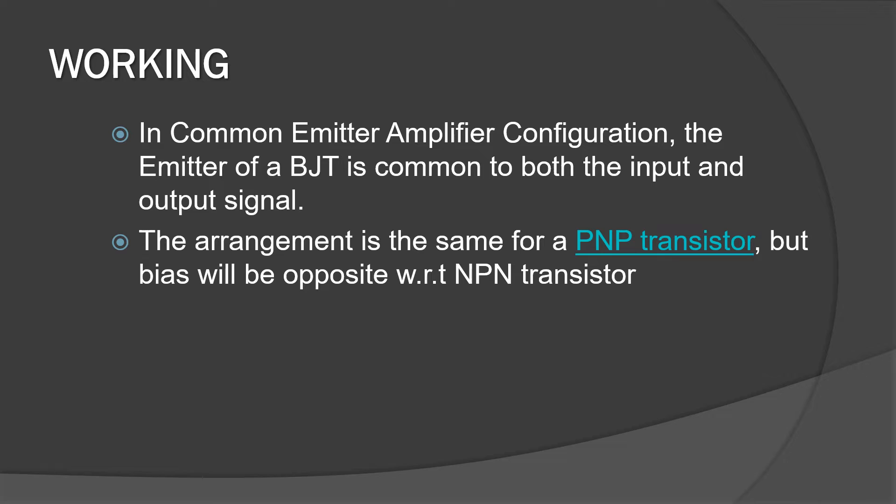Let's see the working of Common Emitter Amplifier. Here, BJT Bipolar Junction Transistor is used for this amplifier. As the name insists, it has emitter as common to both input and output signal. It has similar arrangement for both PNP as well as NPN Transistor. Only they differ in the biasing.